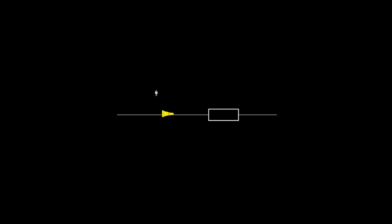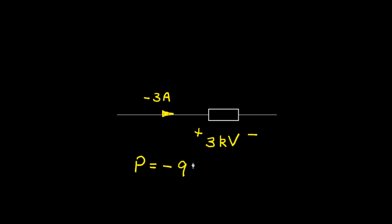In one more example, the arrow points in one direction but the assigned current value is negative 3 amps — meaning the arrow's negative polarity corresponds to a positive current in the opposite direction. With a voltage of 3 kilovolts (3000 volts) assigned to this polarity, the current arrow enters on the positive side, so no additional negative sign is added from the convention. However, the negative current value gives power equal to negative 3 times 3k, which is negative 9 kilowatts. Because that's negative, we once again have a source that is supplying power to the circuit.